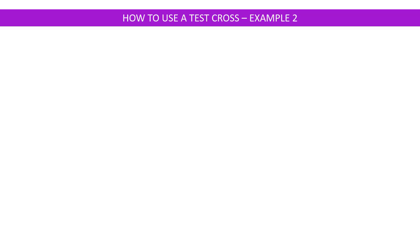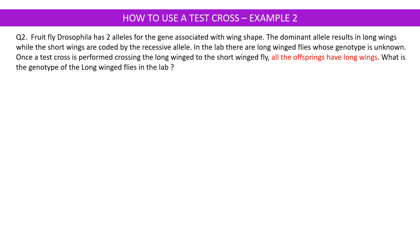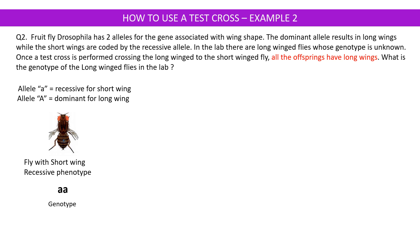Let's take another example. The fruit fly Drosophila has two alleles for wing shape. The dominant allele results in long wings and the recessive allele codes for short wings. Now in a lab we have a group of Drosophila which are all long-winged flies and we don't know their genotypes. When a test cross was performed with this group of flies and a short-winged fly, all the offspring had long wings. What is the genotype of the long-winged flies in the lab? Let's name our alleles: the recessive allele for short wing is denoted by small a, and the dominant allele for long wing is denoted by capital A. The fly with the short-winged recessive phenotype has genotype small a small a and produces gametes small a small a.